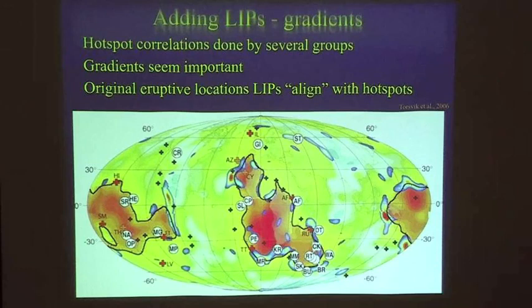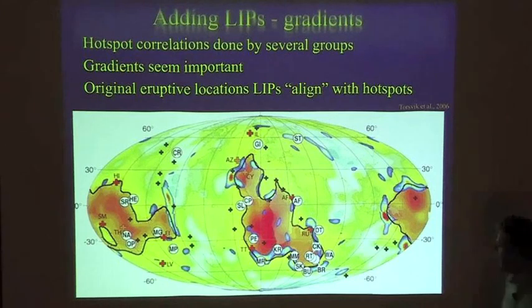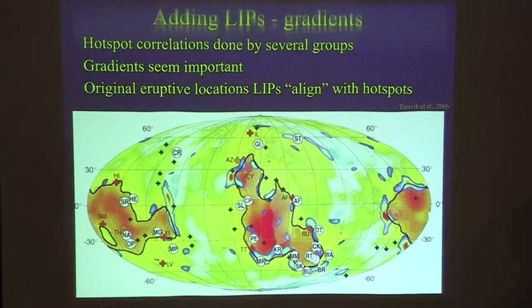This is done with plate reconstructions, assuming that the plates have moved around but the LLSVPs have been in the same place and shape. You're essentially taking seismology from the last few decades and comparing it to long-term history going back perhaps 250 million years. You also don't know how much the LLSVP shape changed over time. And they just picked 1% based on where the gradient seemed steep — that seemed to work out, though I don't know the full process.